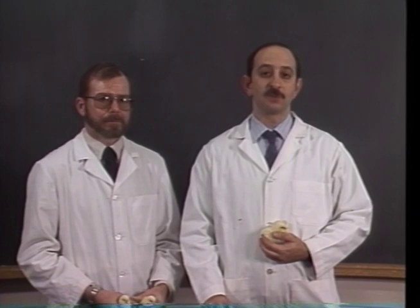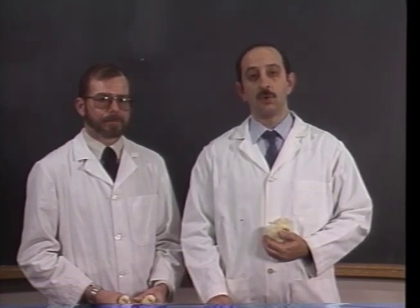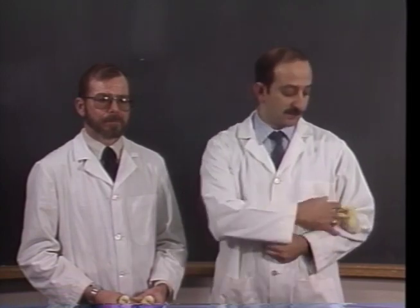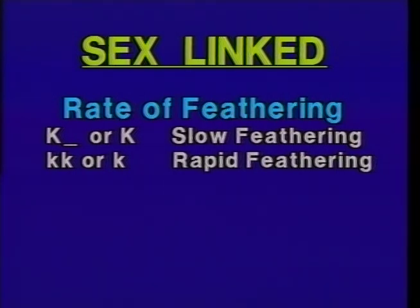Our last chicken example deals with sex-linked traits — rate of feathering and barring. In chickens, the homogametic sex is the male and the female is the heterogametic sex, which is the opposite of humans. For the male, since it's the homogametic sex, having the dominant K allele — regardless of the other allele — produces slow feathering. The female will show the allele she carries: big K means slow feathering, little k means rapid feathering. Little k is recessive to big K, so rapid feathering is recessive. The only way a male will be rapid feathering is to be homozygous little k, little k.